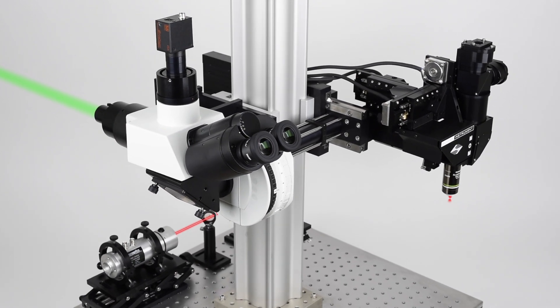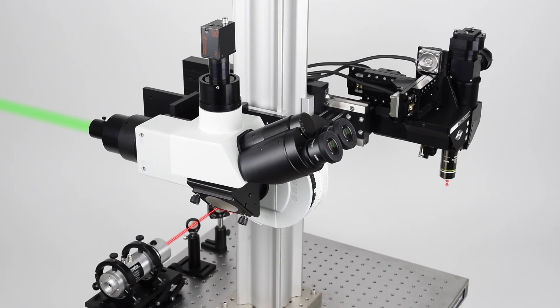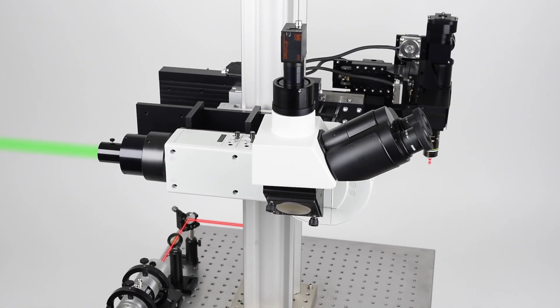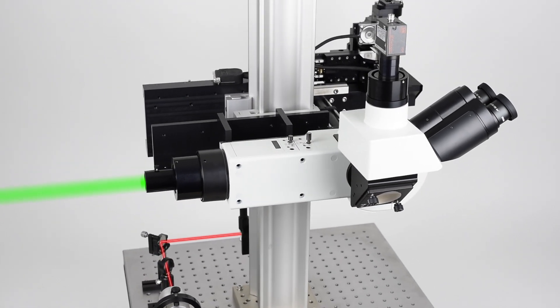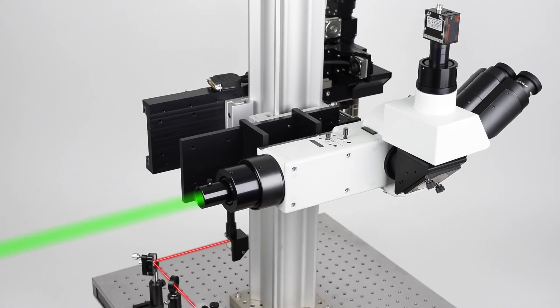Excitation light is brought in through the rear port of the vertical illuminator and then reflected to the sample through the use of excitation filters and dichroic mirrors, allowing full utilization of wide-field imaging modalities.